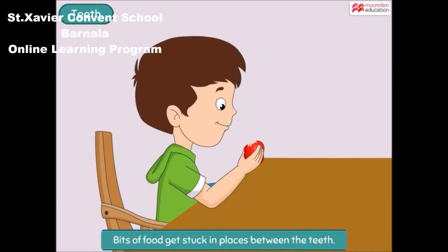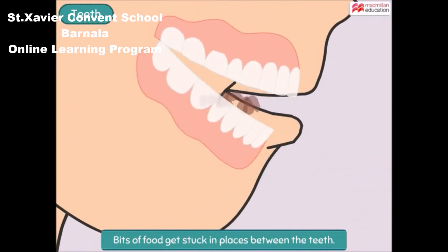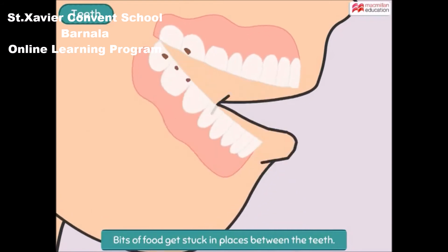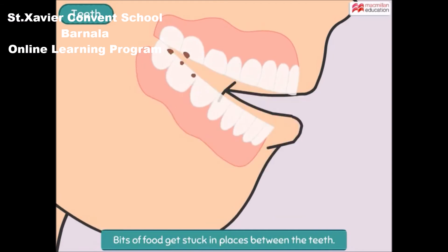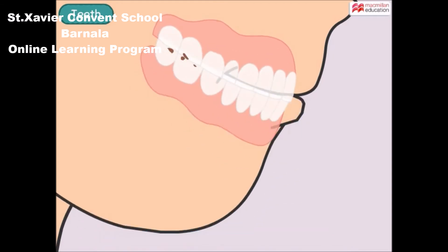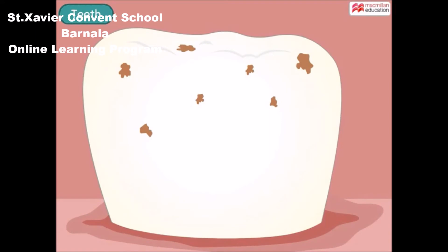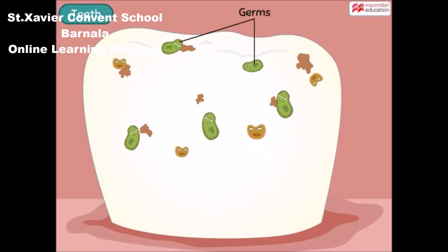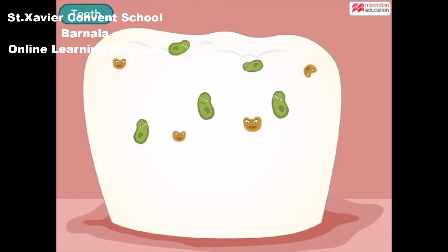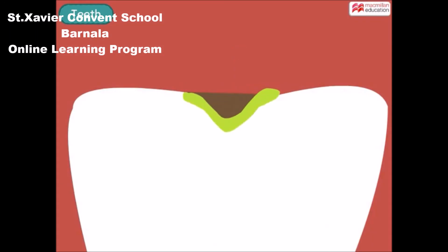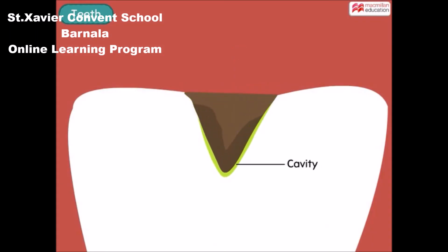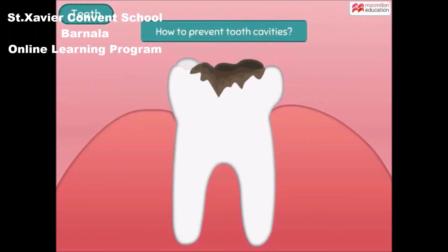When we eat something, little bits of food get stuck in the places between the teeth. These bits remain in the mouth even long after a meal is over. Tiny living things called germs start feeding on this food and start producing acid. This acid can cause holes in the teeth, called cavities, which cause pain and make it difficult for us to eat our favourite dishes. So, how do we prevent cavities?